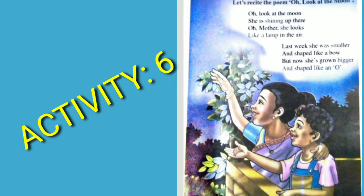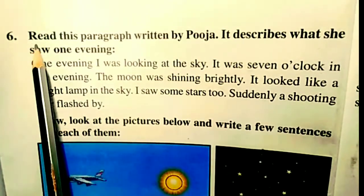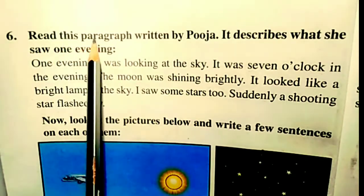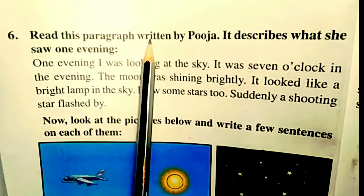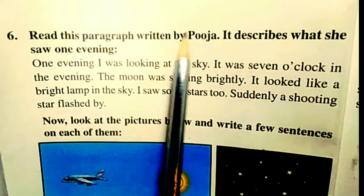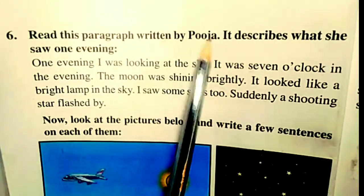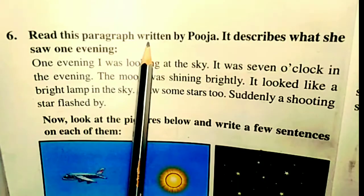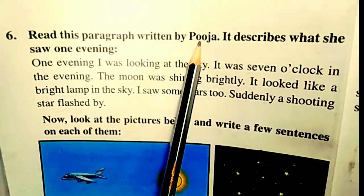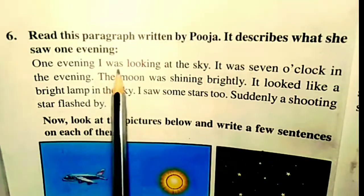Dear students, today we'll do Activity 6 from Lesson 1, Oh Look at the Moon. This paragraph was written by Pooja. Poojaar Dwarah — meaning written by Pooja — they have given a paragraph to read.